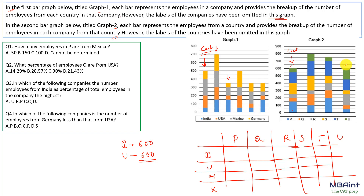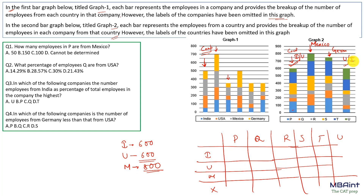If this is India, this would be USA, and if this is India, this would be USA. Now summing for Mexico — the gray region: 200 + 200 + 100 = 500 + 100 = 600 + 150 = 750 + 50 = 800. So Mexico is 800. This makes it very clear that this country would be Mexico. What is remaining is Germany, so this would be Germany.